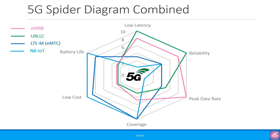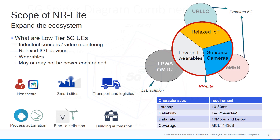This is the combined spider chart with eMBB, URLLC, LTE-M and NB-IoT. At this point, let's look at what kind of devices are included in NR Light. As you can see in this slide from Qualcomm, there is a requirement for devices in between — wearables, sensors, cameras, relaxed IoT, etc. These devices do not strictly fall under eMBB, URLLC, and MMTC, so this is the void that NR Light is trying to fill.